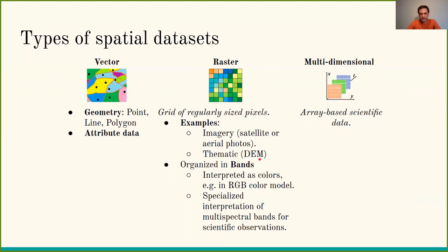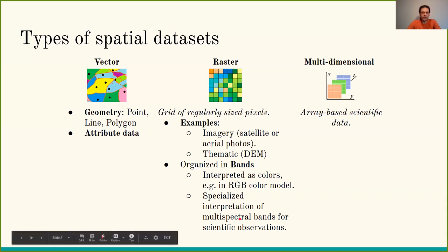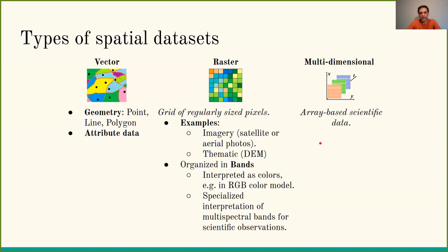Rasters are organized in bands. For example, we could have a three-band raster interpreted in the red-green-blue color model, or more specialized interpretation of bands, for example in multispectral bands for scientific applications. There is also a third type of spatial dataset, the multidimensional. Multidimensional assets are usually array-based scientific data containing values, for example from sensor measurements or results from physical modeling.